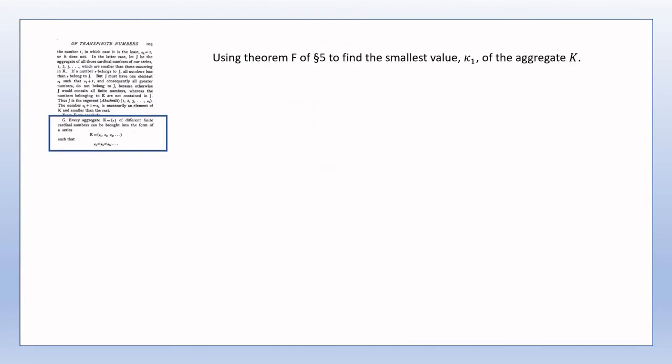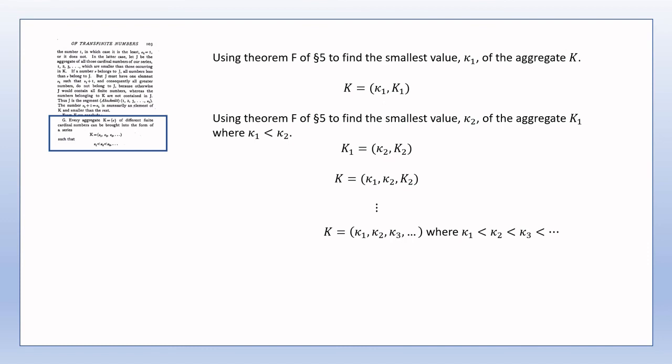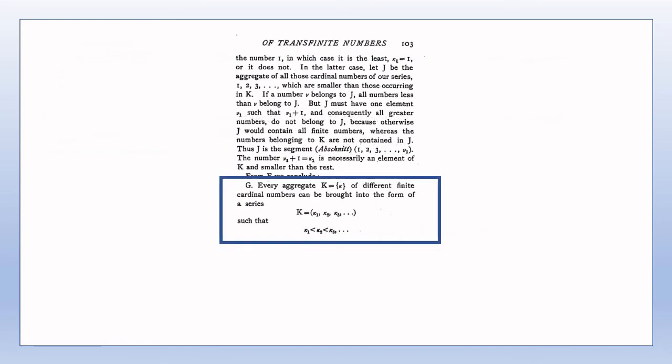I imagine the proof of theorem G going along the line of using theorem F to find the smallest cardinal number kappa 1 in the aggregate k. That's equal to the union aggregate of the objects kappa 1 and k1, and then apply theorem F to k1 to give k1 equals the union aggregate of the objects kappa 2 and k2, where kappa 2 is the least cardinal number in k1 and k1 is less than k2, and hence k is equal to the union aggregate of k1, k2 and k2 and so on. Of course k may not be a finite aggregate, but we may continue to apply theorem F infinitely many times to obtain the result of theorem G. Applying theorem F an infinite number of times needn't be considered suspect, since in the first place we may have to inspect an infinite number of elements of the aggregate k in order to identify the smallest element kappa 1.